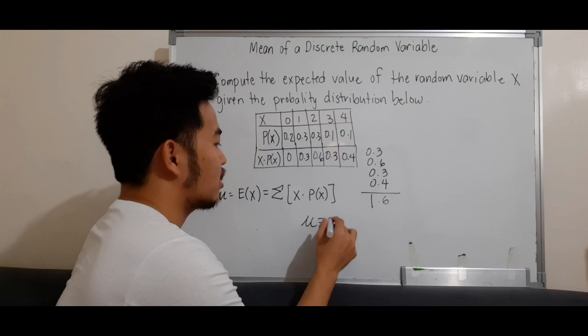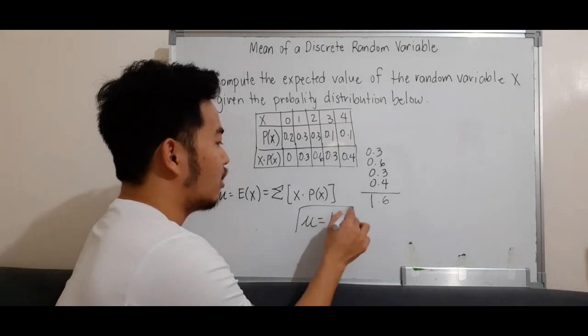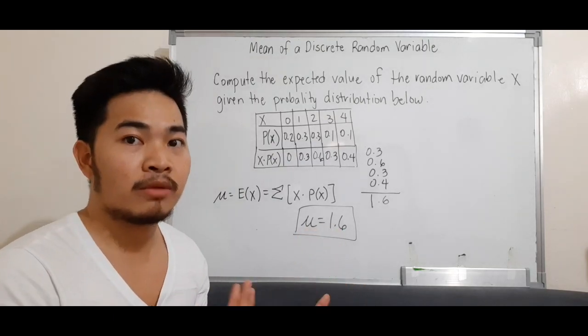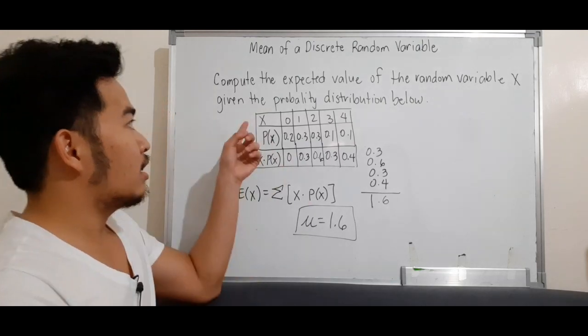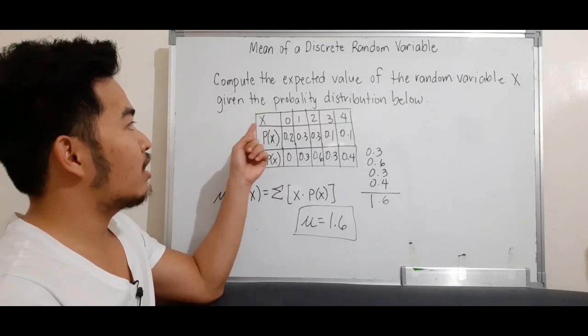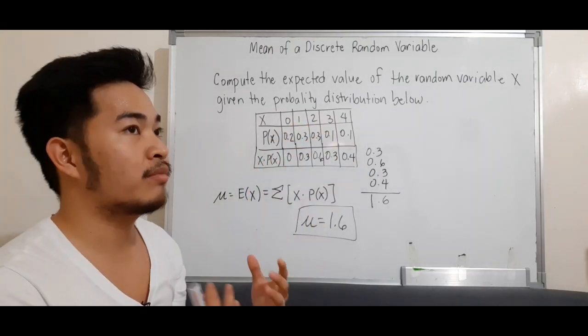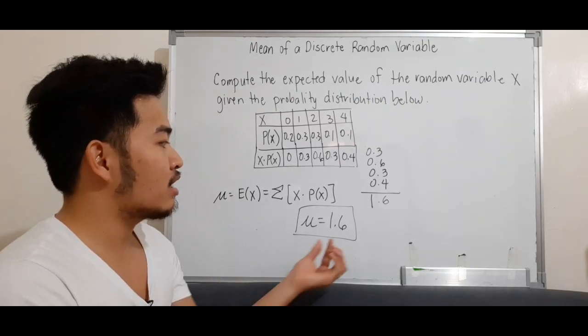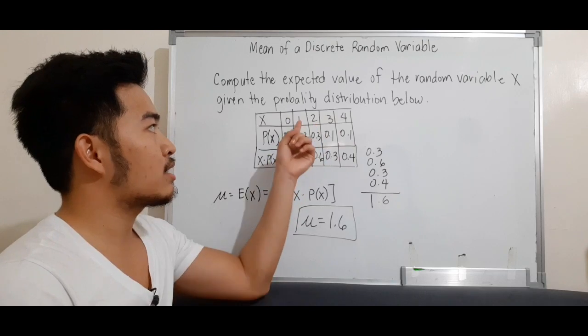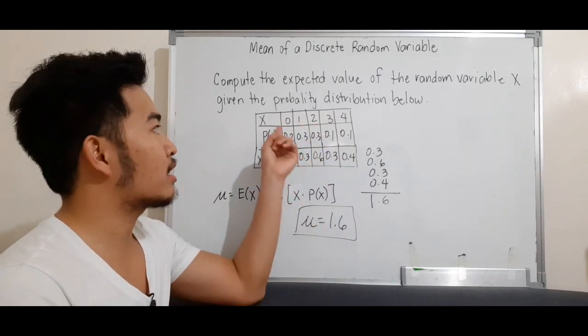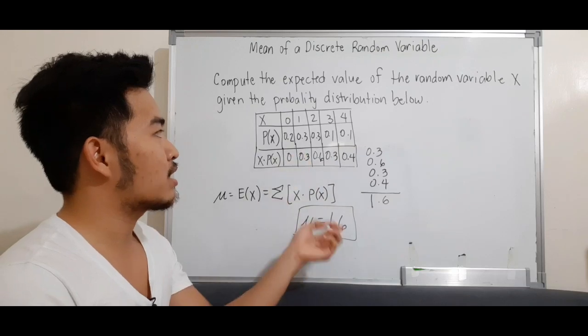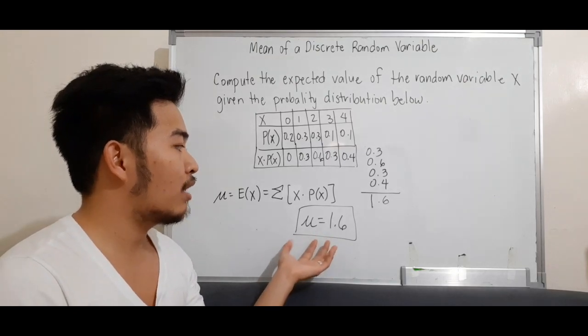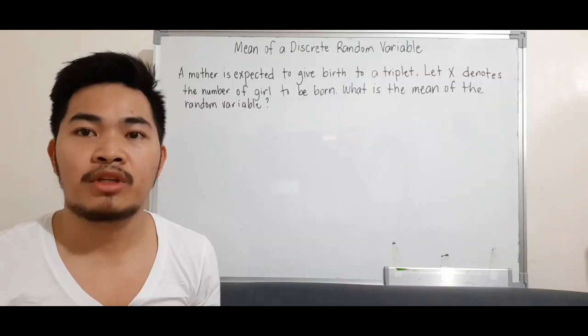So we have the mean or expected value equal to 1.6. What does an expected value of 1.6 mean? If you're asked to interpret the result, it means the random experiment here has values 0, 1, 2, 3, and 4. If that experiment is repeated, the expected value is between 1 and 2, since we got 1.6 and there's no exact x value of 1.6.